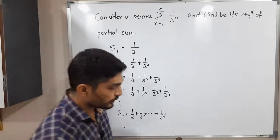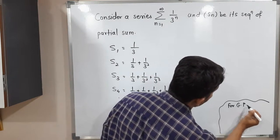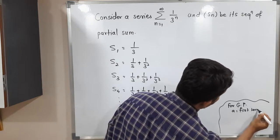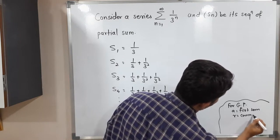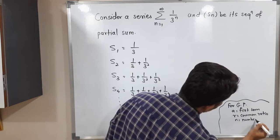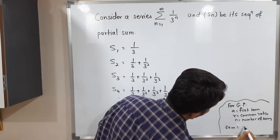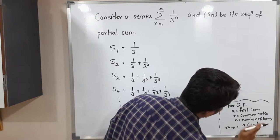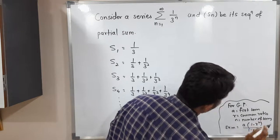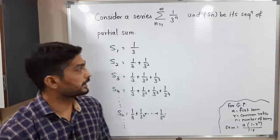For a geometric series, or geometric progression, where a is the first term, r is the common ratio, and n is the number of terms, the sum formula is: S = a × (1 − r^n) / (1 − r). This formula gives us the sum of the first n terms of a geometric progression.